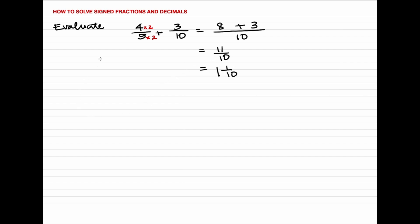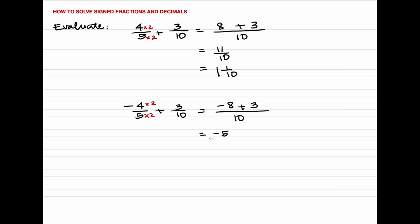Now if we make the fraction 4 over 5 into negative 4 over 5 and then add it to 3 over 10, the same process must be done, but the difference is that negative 4 times 2 will give us negative 8. So negative 8 plus 3 will now be negative 5. The result is negative 5 over 10, or negative 1 over 2.